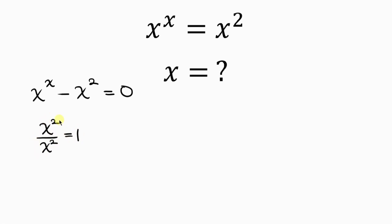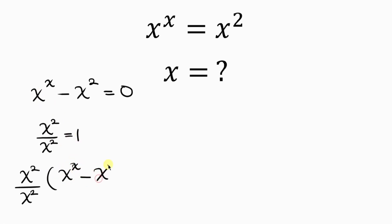We know that x² divided by x² equals 1, so I'm going to use that expression to multiply what we have. This gives us x² over x² times x to the x, minus x², equal to zero.